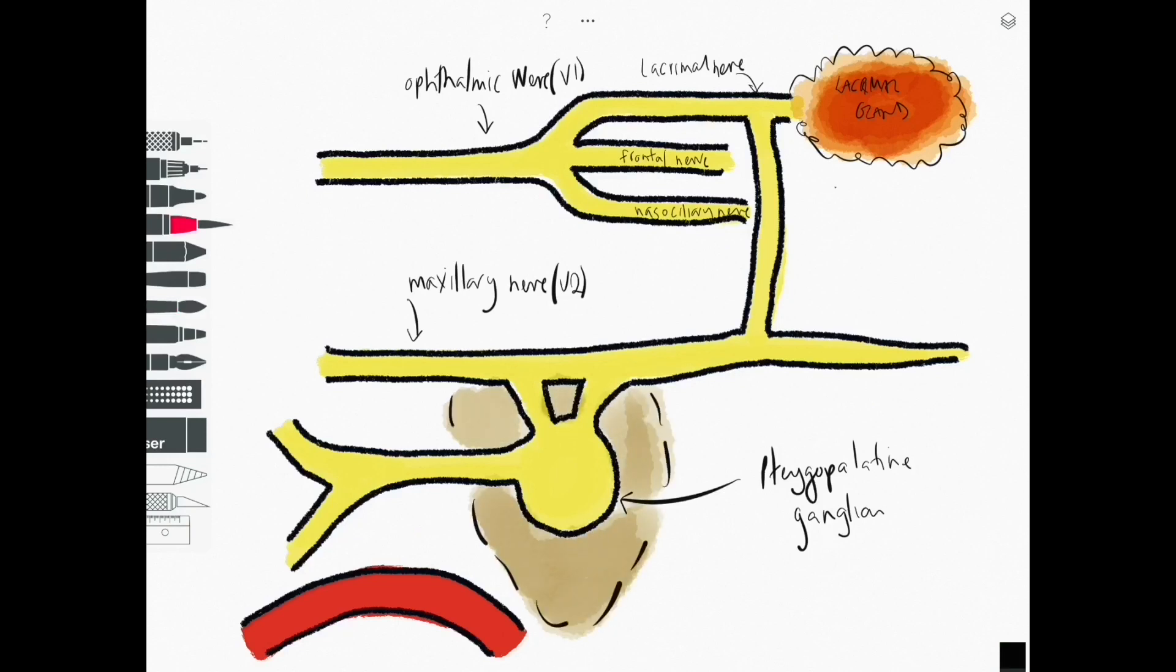The pterygopalatine ganglion is known as a parasympathetic ganglion. It hangs off the maxillary nerve but remember that the trigeminal nerve has no parasympathetic outflow of its own so it has to come from elsewhere.